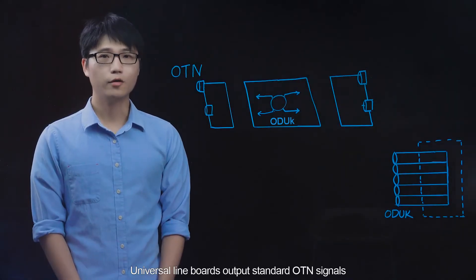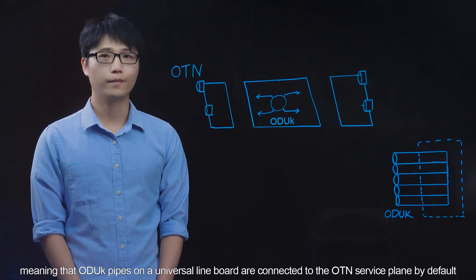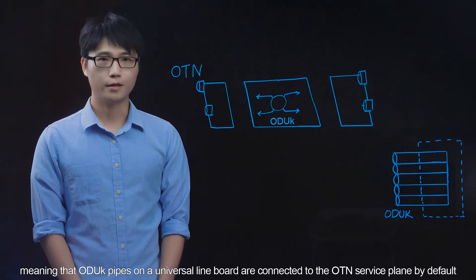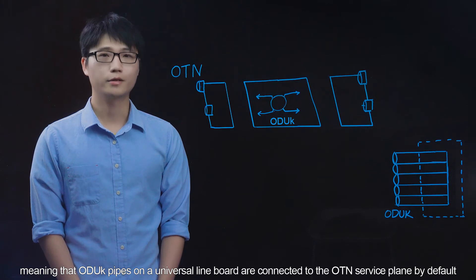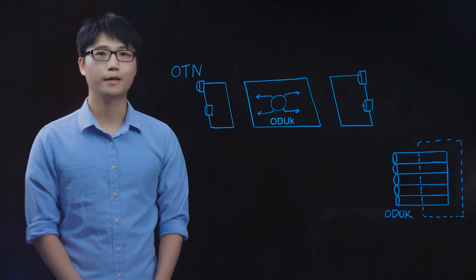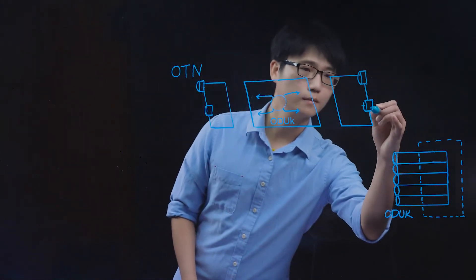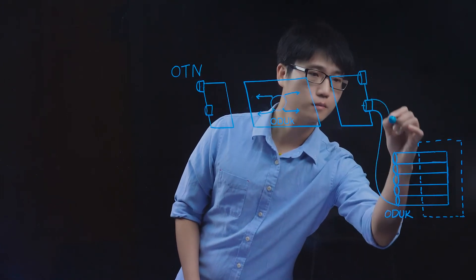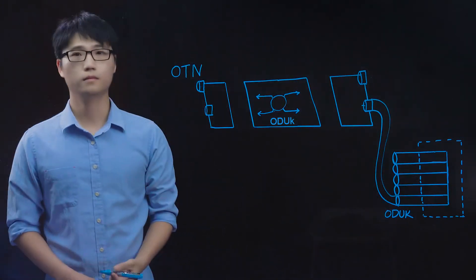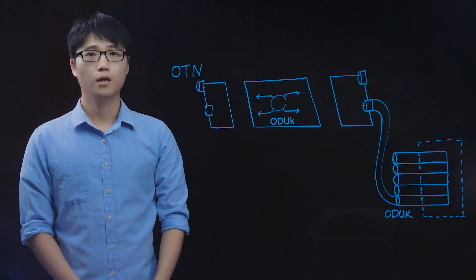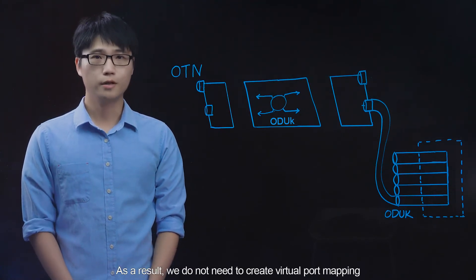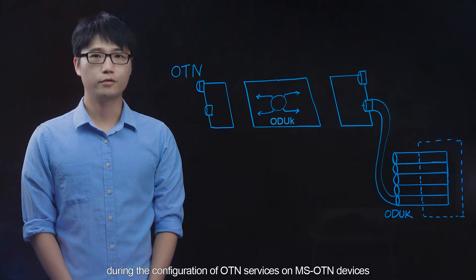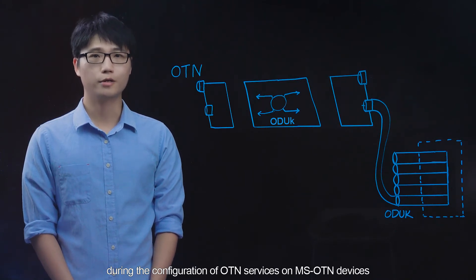Universal line boards output standard OTN signals, meaning that ODUk pipes on a universal line board are connected to the OTN service plane by default. As a result, we do not need to create virtual port mapping during the configuration of OTN services on MSOTN devices.